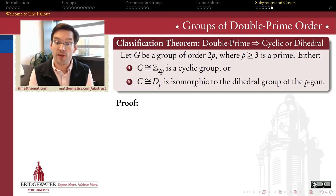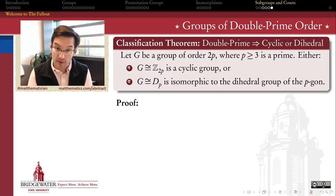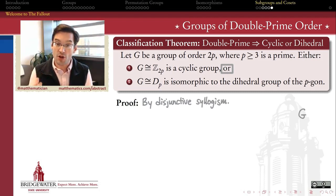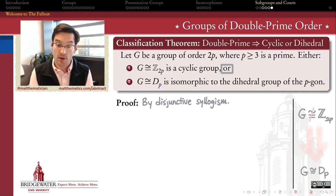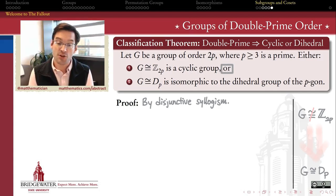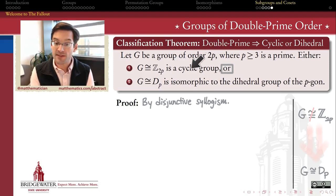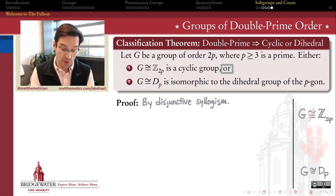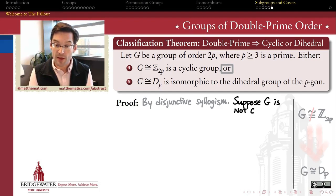These are the only two isomorphism classes of groups whose order is twice an odd prime. So how are we going to prove this classification theorem? As you might expect, Lagrange's theorem is a key element. Because this is a disjunctive statement — an either-or — we're going to prove this using the strategy of disjunctive syllogism. We're going to prove that if the first condition does not hold, then the second condition must hold. In other words, if I have a group of order 2P that's not cyclic, then we're going to prove it's isomorphic to the dihedral group of the P-gon.